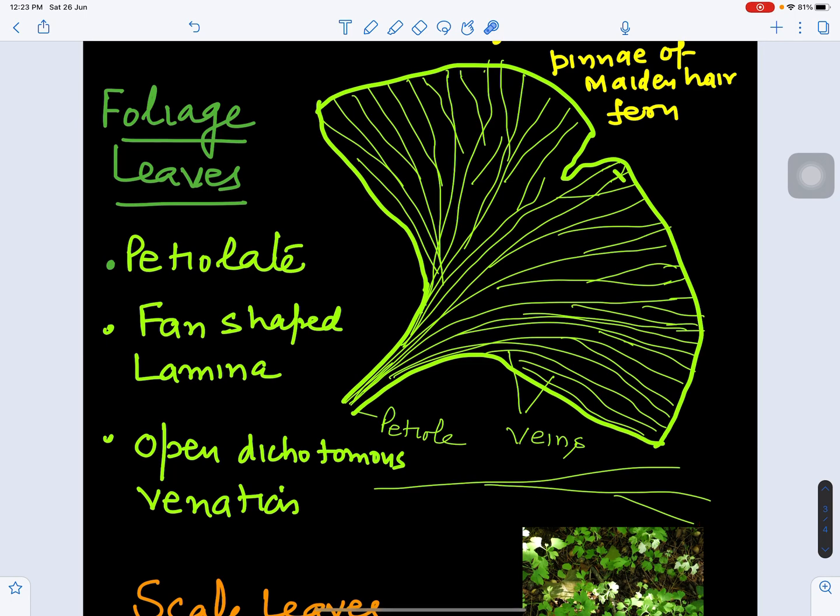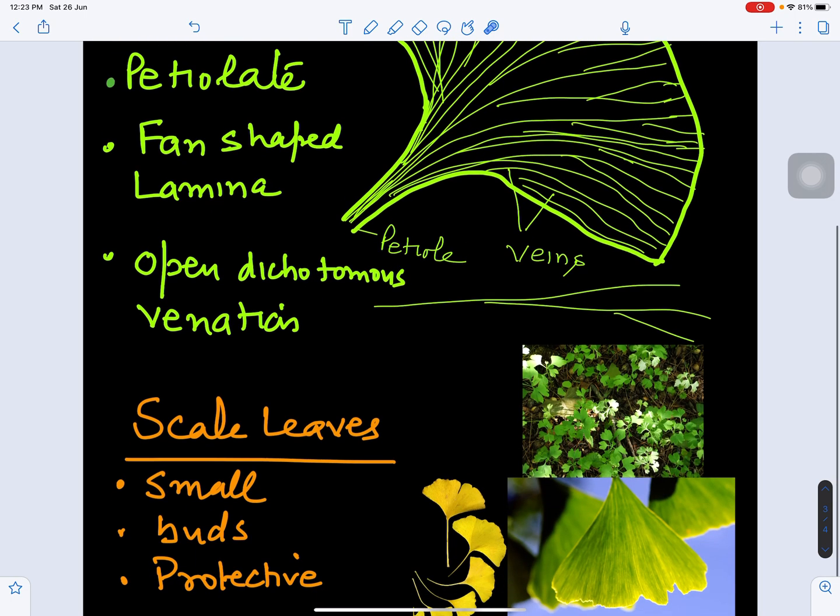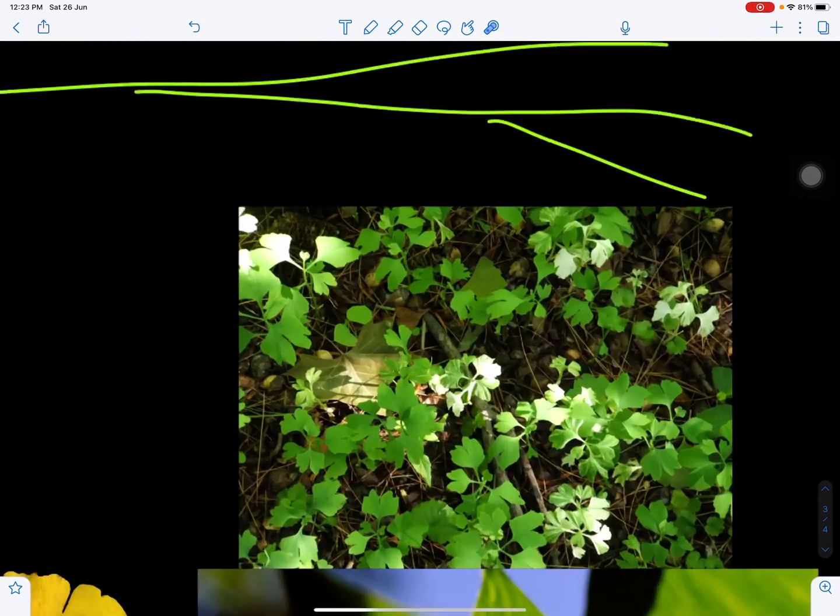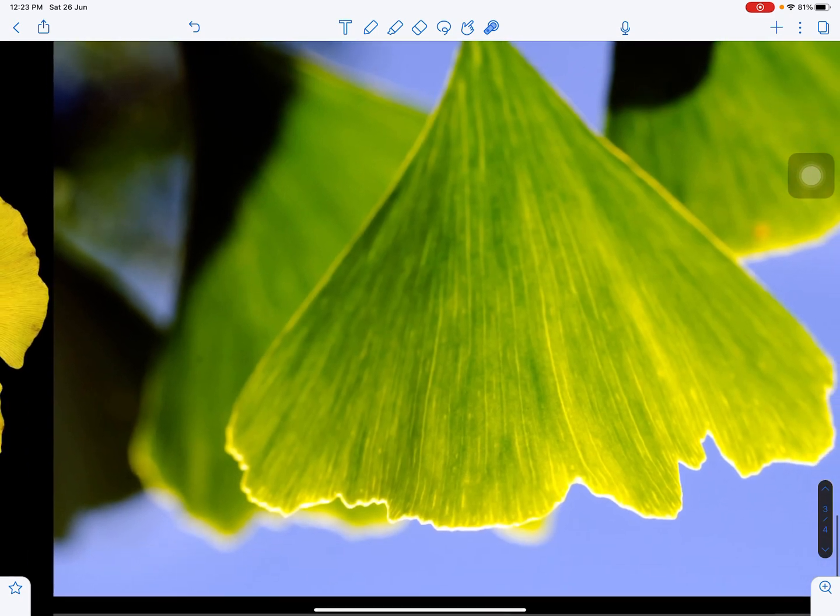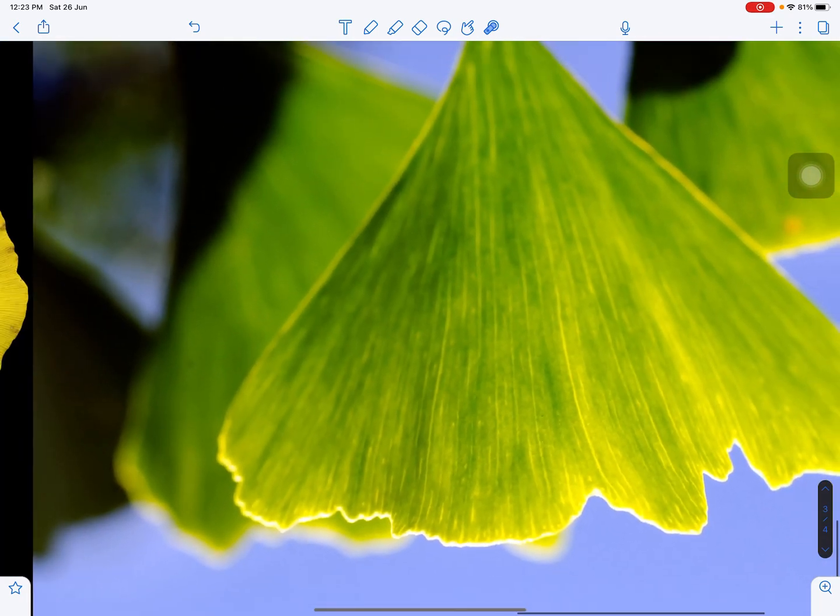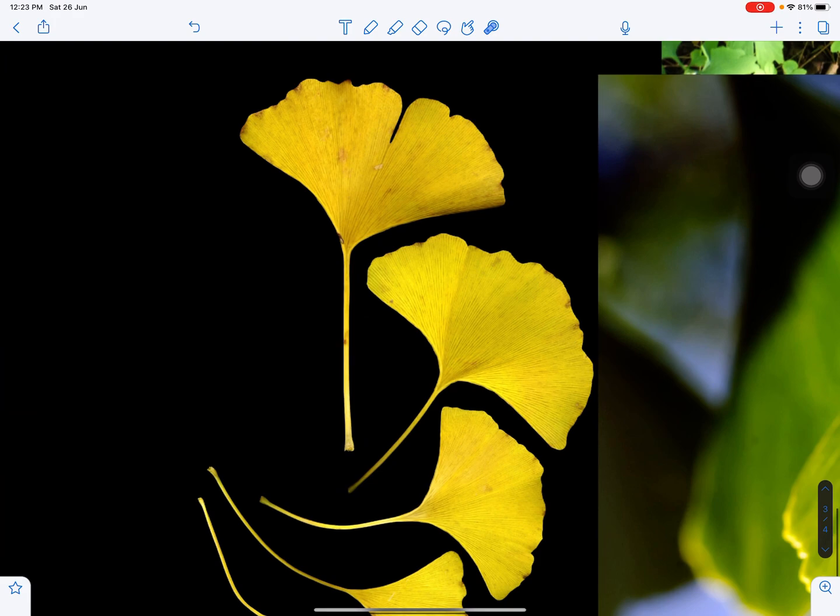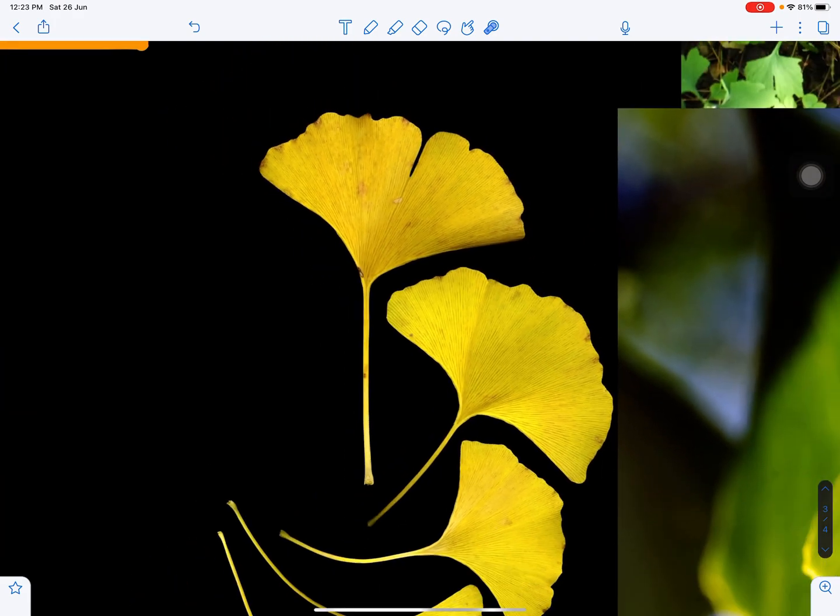The second type of leaves are scale leaves, usually present on the buds. They help in protection of the buds so they are protective in function and brown in color. Here are the leaves of Ginkgo biloba showing venation, and this is the leaf of the autumn season which will fall down and turn yellow in color. This is about the morphology of Ginkgo biloba.